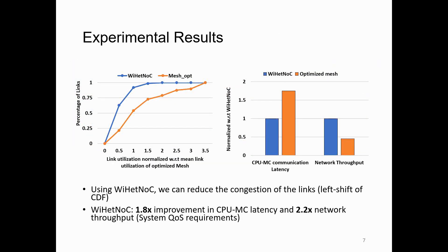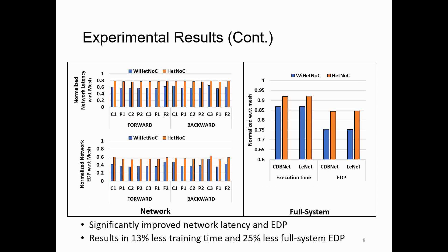By using the methodology outlined in our paper and Y-Hit NoC, we can greatly reduce the congestion of the links seen in the mesh system earlier. This is illustrated in the left shift of the CDF in the graph on the left. By using Y-Hit NoC, we were able to improve CPU-memory-controller latency by 1.8 times and overall network throughput by 2.2 times, greatly improving both network QoS requirements. This results in significantly improved network latency and EDP. On average, across the layers, Y-Hit NoC reduces latency by 41.8% and EDP by 60%, translating into a total of 13% less CNN training time and 25% less full-system EDP.